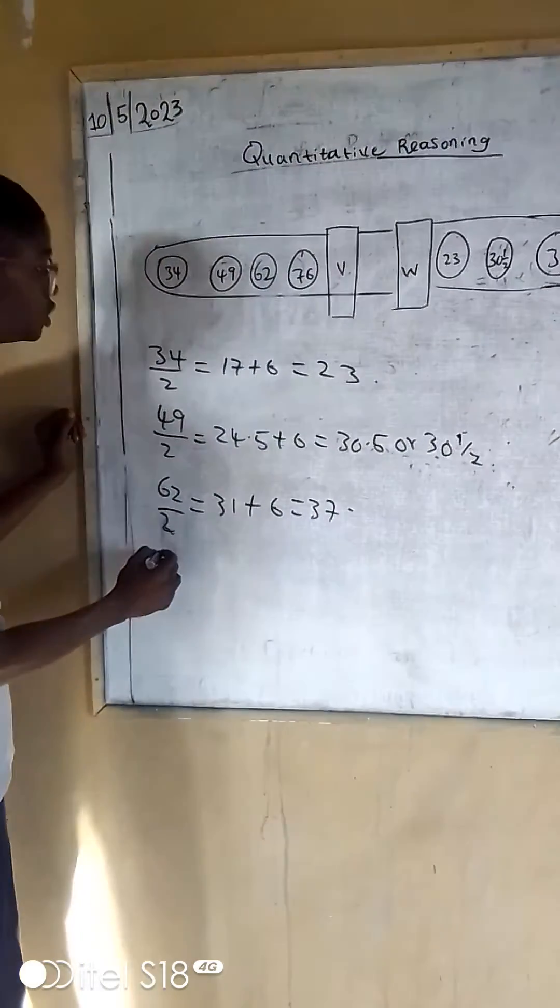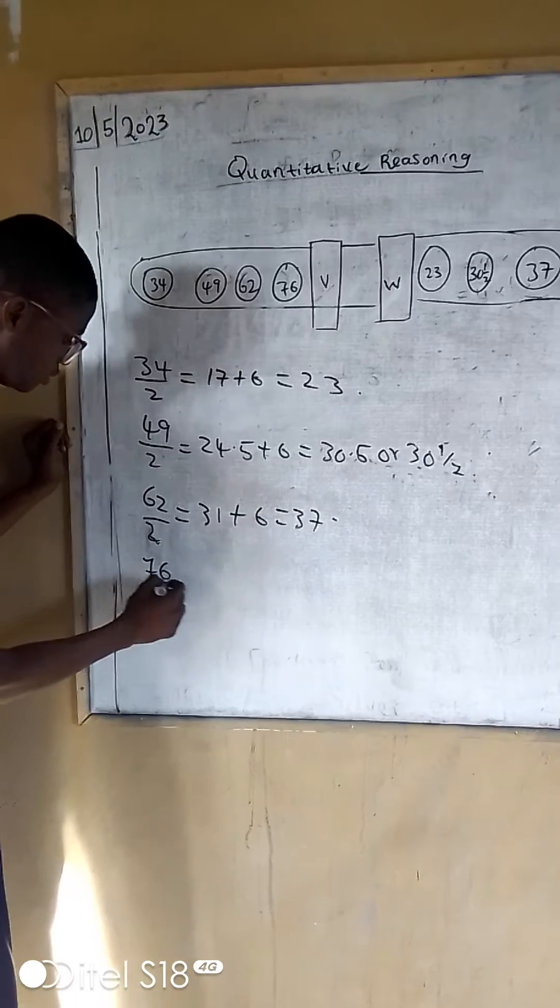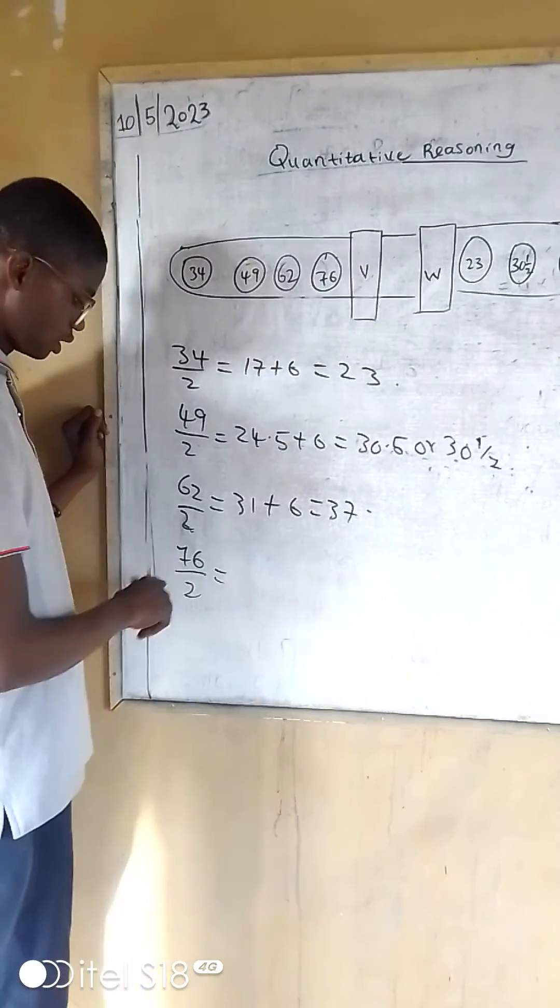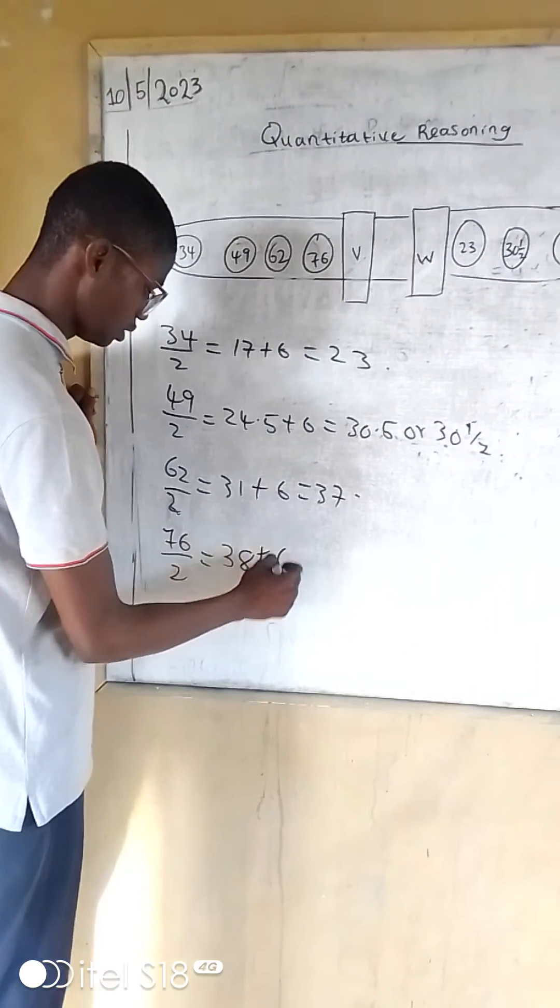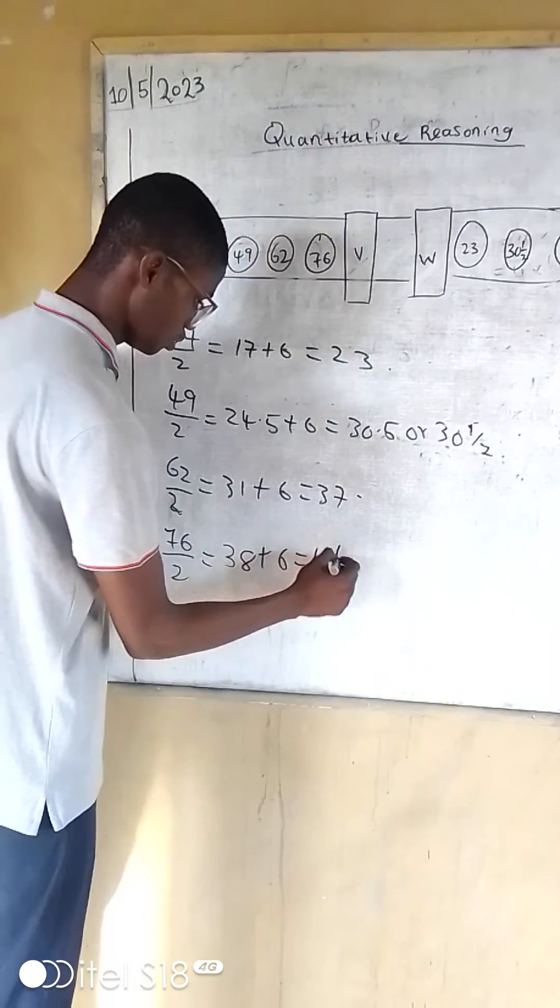Then we will have the last one, which is 76 divided by 2 will give you 38 plus 6 will give you 44.